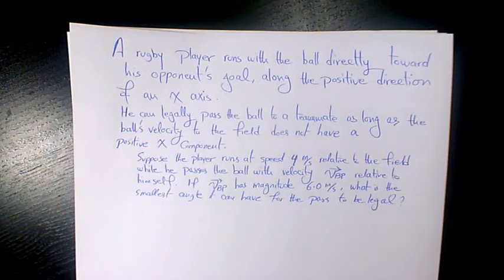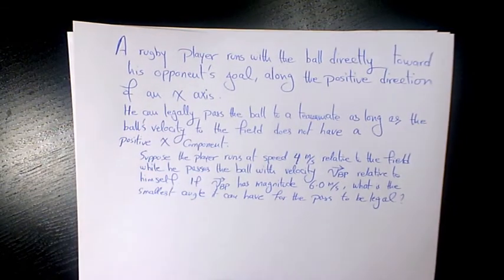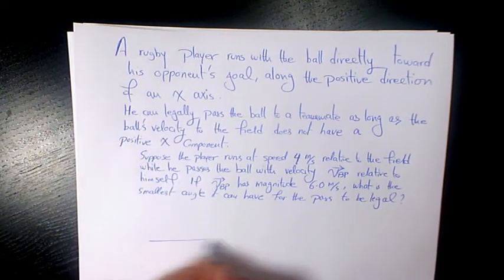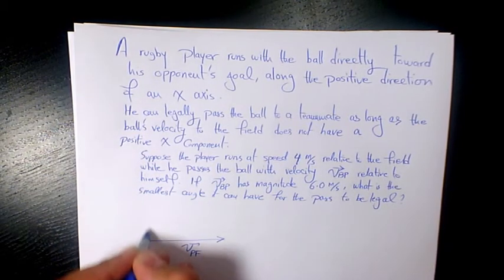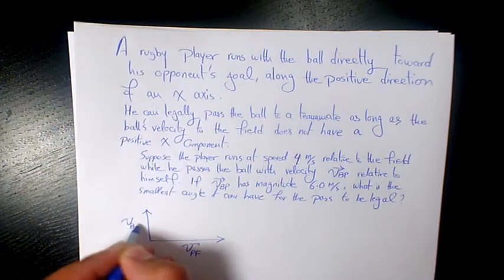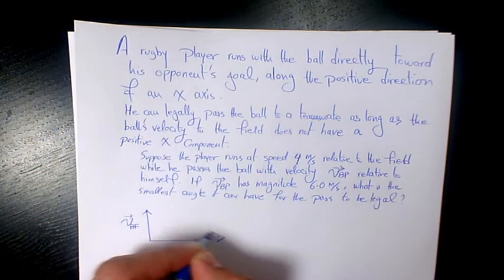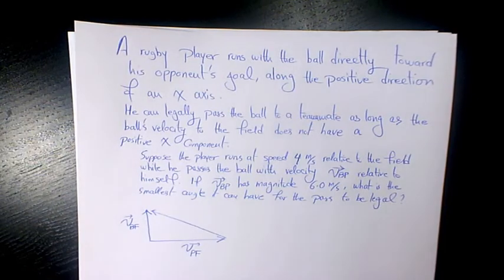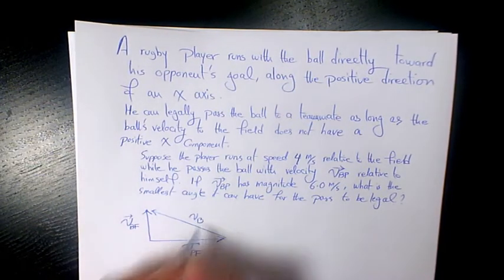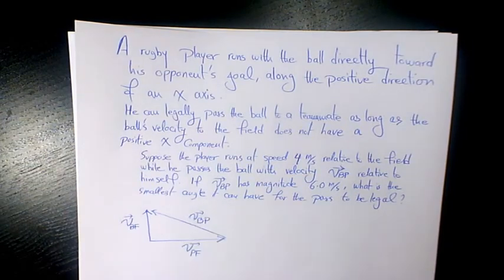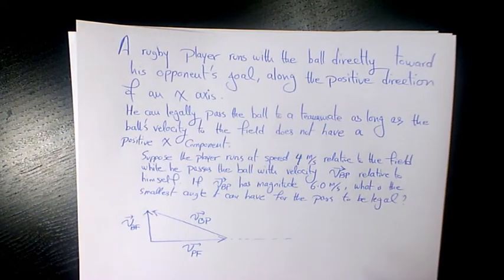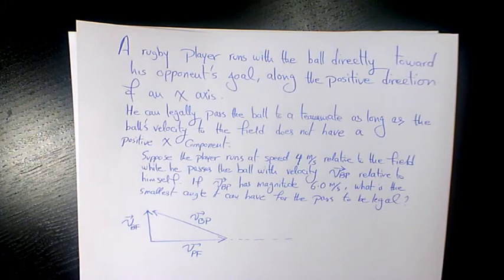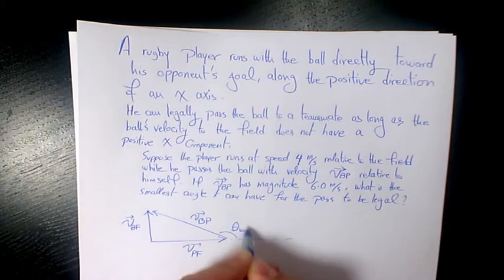VBP is basically the velocity of the ball with respect to the player while he is passing. So we have the velocity of the player with respect to the field, and the velocity of the ball with respect to the field. The velocity of the ball with respect to the player is derived from those, and this gives us theta minimum.